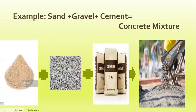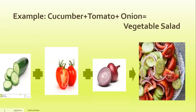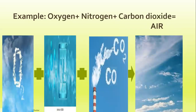Another example is sand plus gravel plus cement — you can form a concrete mixture. Our third example: cucumber plus tomato plus onion equals the yummy vegetable salad. Another example is the combination of oxygen, nitrogen, and carbon dioxide — they are gases that form the air.